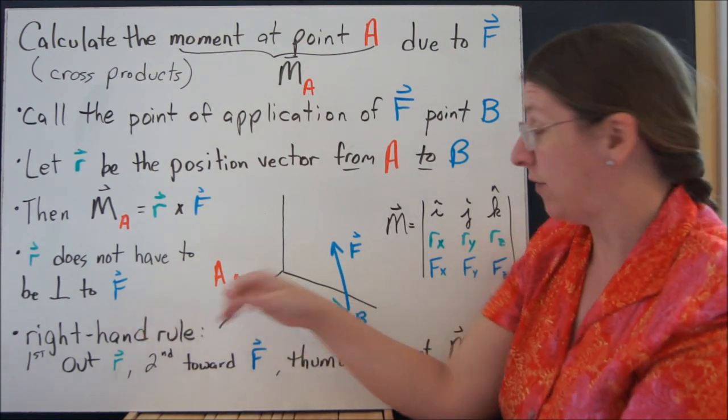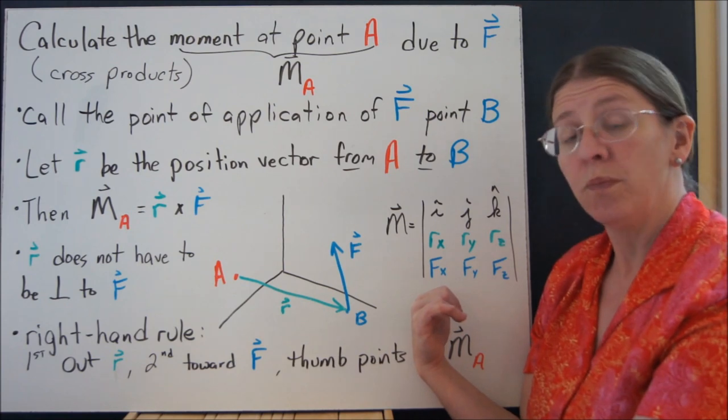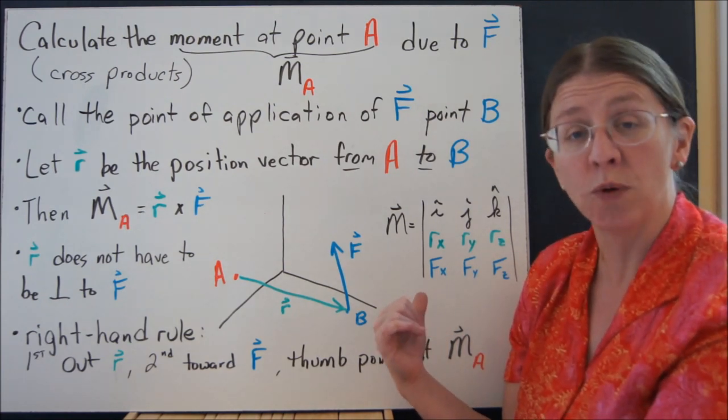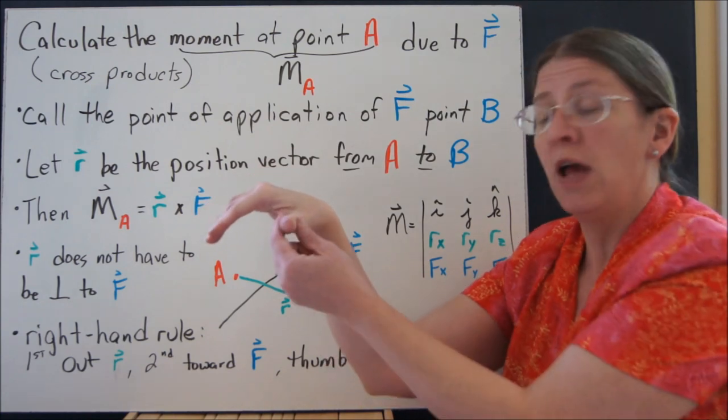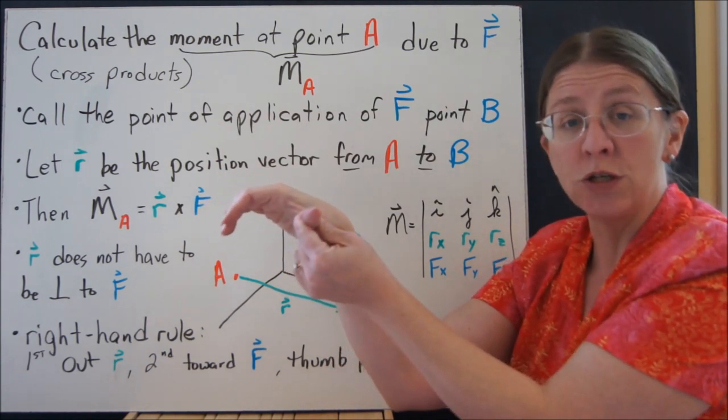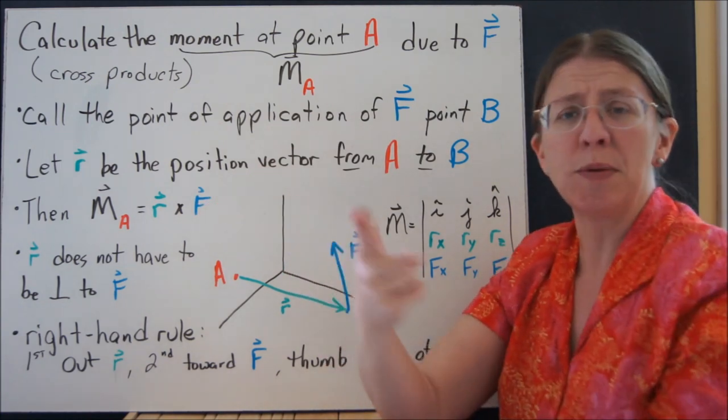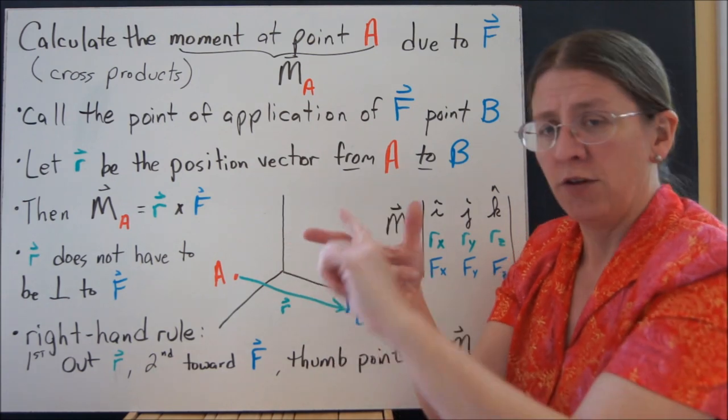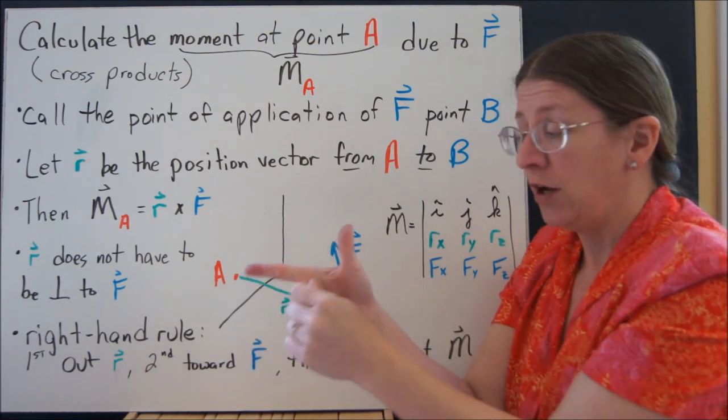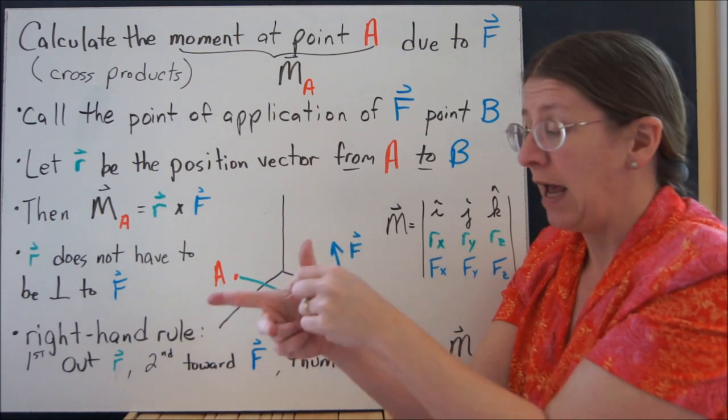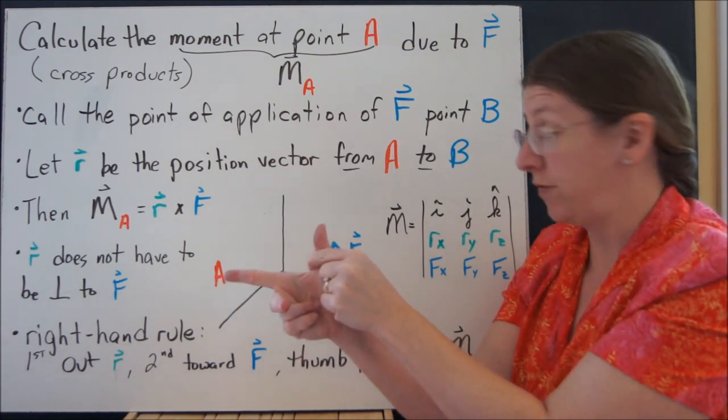R does not have to be perpendicular to F, that's what the cross-product is for. The right-hand rule still applies if you want to think about it. Put your hand out R, curl in the direction of F, and your thumb is telling you which way this goes. Sometimes people do it with three fingers too. Your first finger is R, out the direction of R. Your middle finger is F, and your thumb is going to give you the direction of your moment.